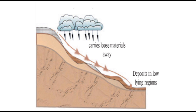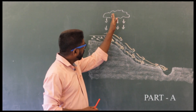Rainwater carries away the loose rock particles from elevated regions and deposits them in low-lying regions. This process reduces the height of elevated regions. Due to the deposition of rock particles, the height of low-lying regions will increase.